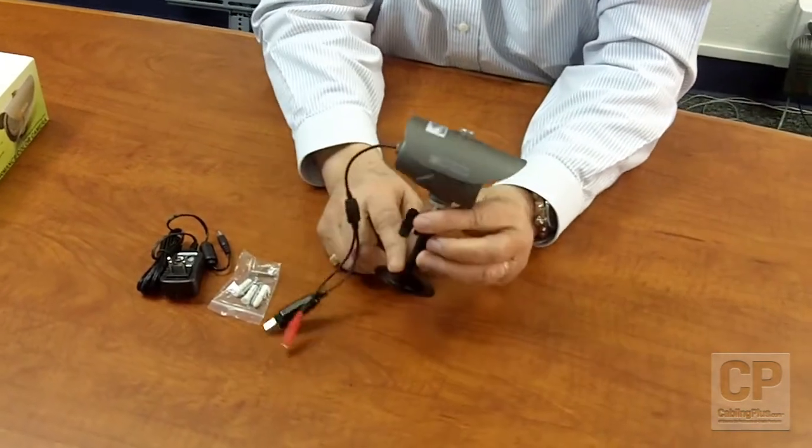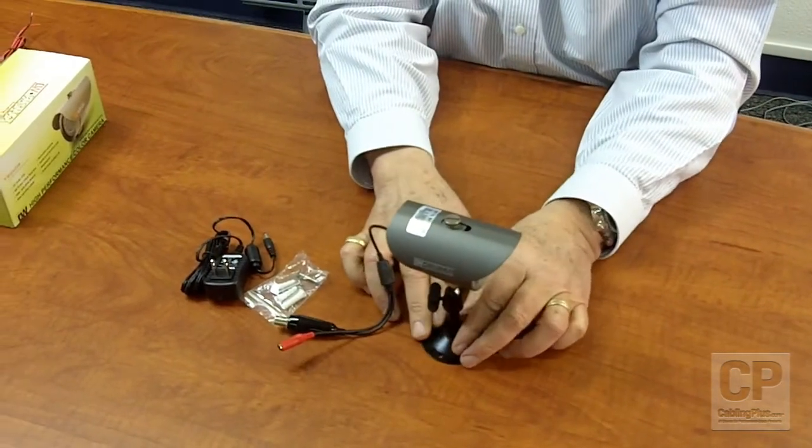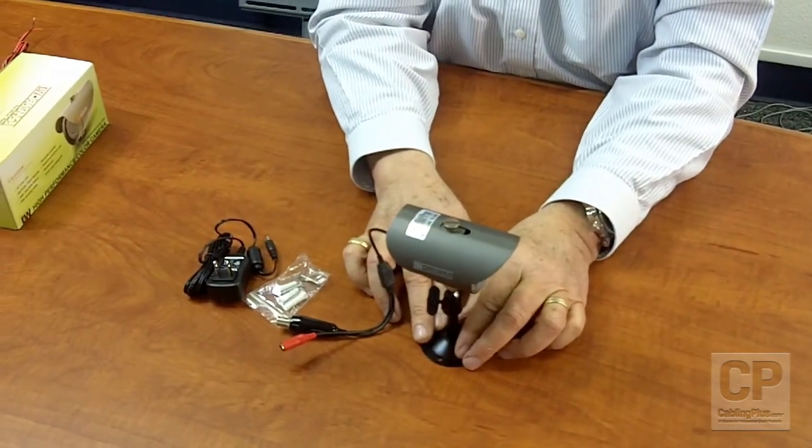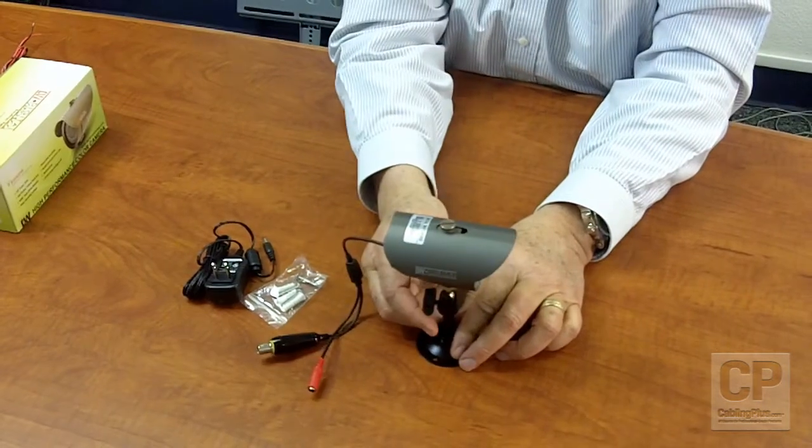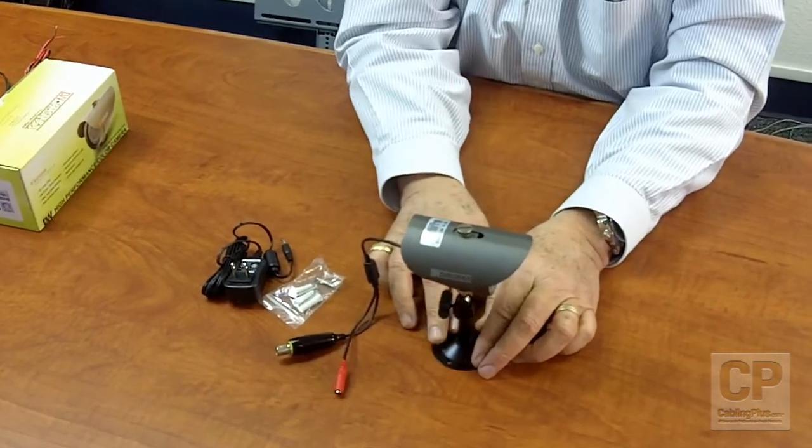It also comes with a very unique mounting bracket, which allows you to either ceiling mount it, mount it on a wall, or just about any configuration you can think of, and then you have an adjustable gimbal that allows you to point the camera in the direction you'd like to see the picture in.